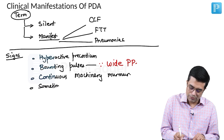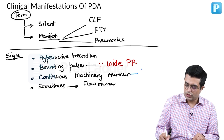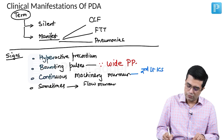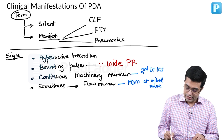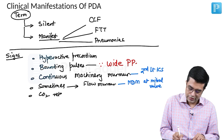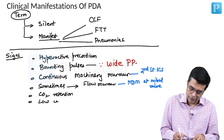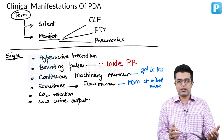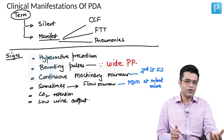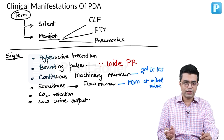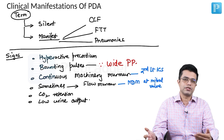Sometimes if the diastolic component is faint, you can also appreciate a flow murmur. The continuous machinery murmur is usually best audible in the second left intercostal space. The flow murmur is a mid-diastolic murmur produced at the mitral valve due to increased flow. You will also find features of CO2 retention. Many preterm newborns can develop low urine output because the left-to-right shunt is large, reducing flow in the descending aorta, causing pre-renal injury — which responds to hemodynamic measures and medical closure.